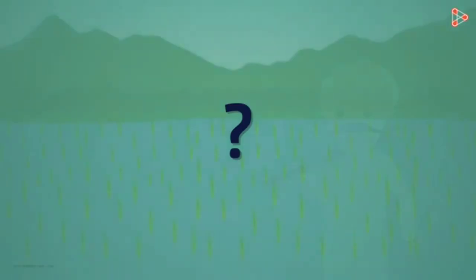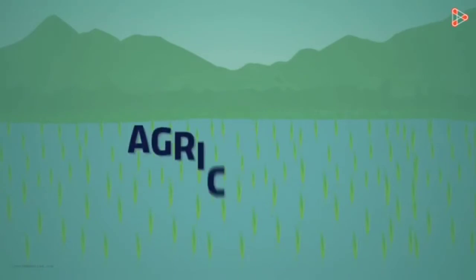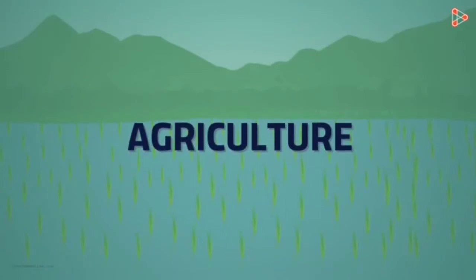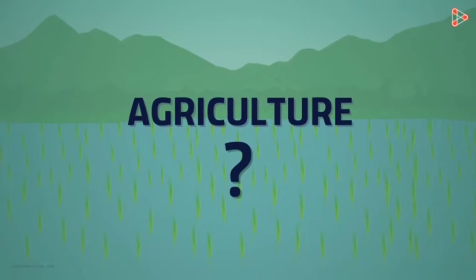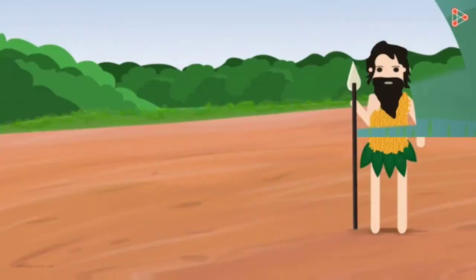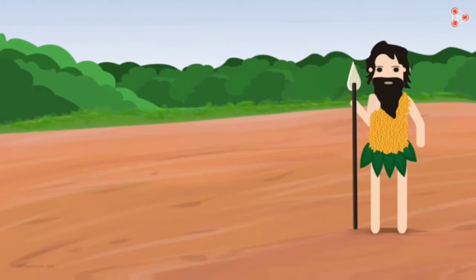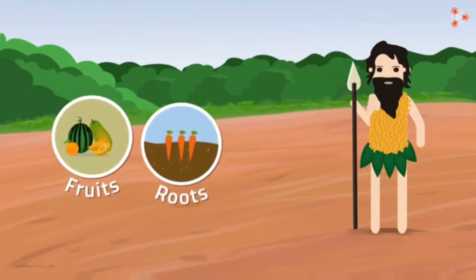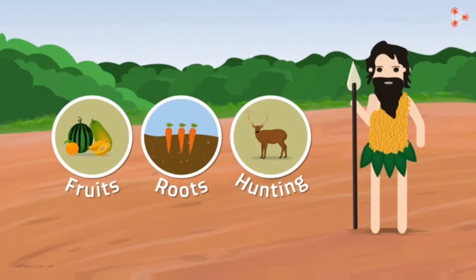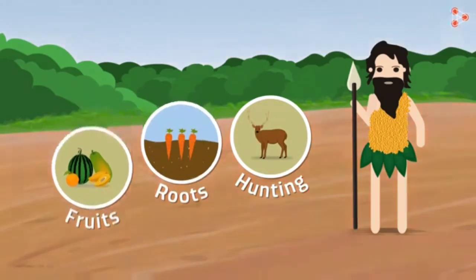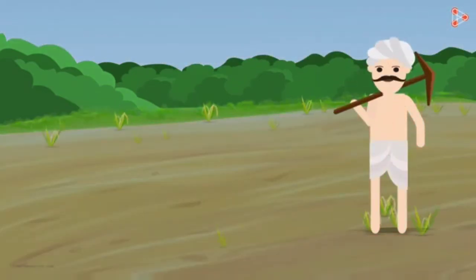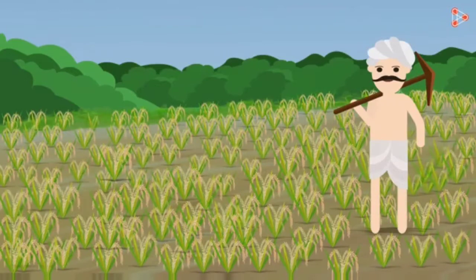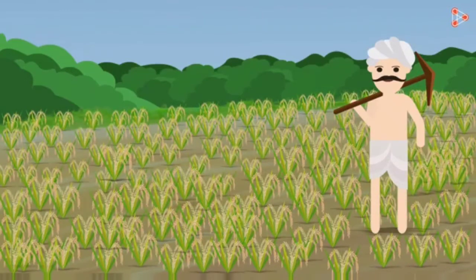What do we call production of plants in a specific area of land? Agriculture! But how did man get this idea? Man was nomadic for many years, and survival was mainly dependent on fruits, roots, and hunting of animals for food. Eventually, man learned the culture of cultivation by observing nature.